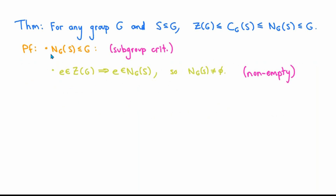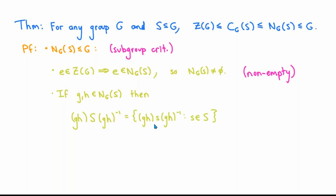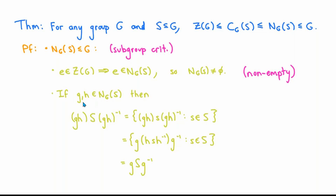Next, we want to show that the normalizer is closed under multiplication. Suppose that g and H are two elements of N sub G of S, and let's think about what happens when we conjugate the set S by the element gH. By definition, we get the set of all elements of the form gH times s times (gH) inverse, where s runs through S. Using the fact that (gH) inverse equals H inverse times g inverse, together with the generalized associative law, we can write that as the set of all elements of the form g times HsH inverse times g inverse. But since H is in the normalizer, as s runs through S, the set of all HsH inverse also runs through all elements of S. So this set is the same as gSg inverse, which since g is also in the normalizer equals S. This shows that gH is an element of the normalizer, so the normalizer is closed under multiplication.